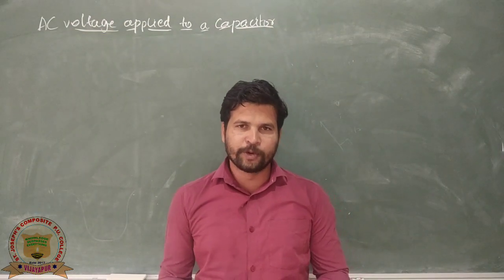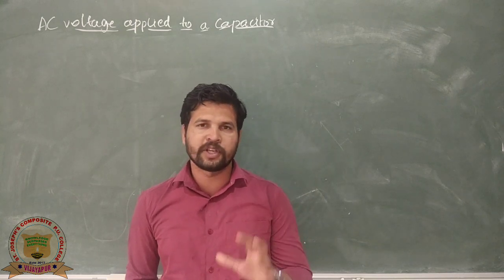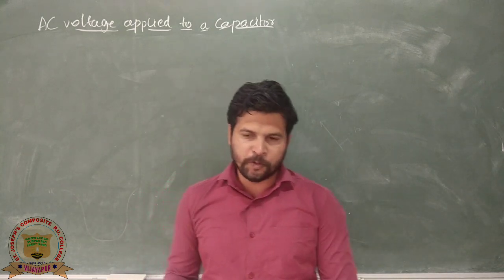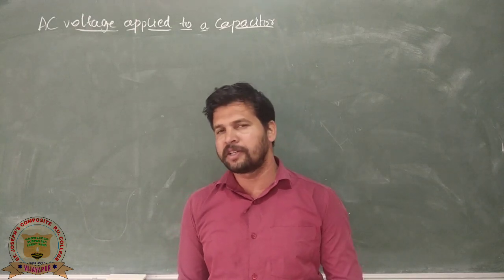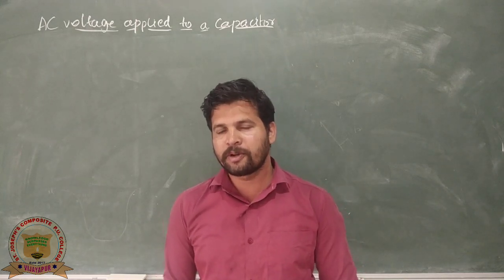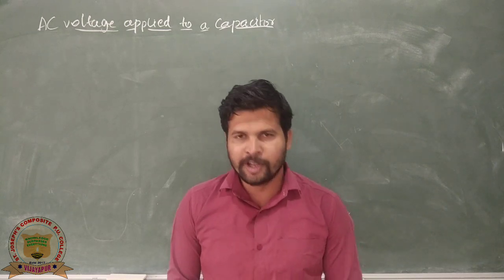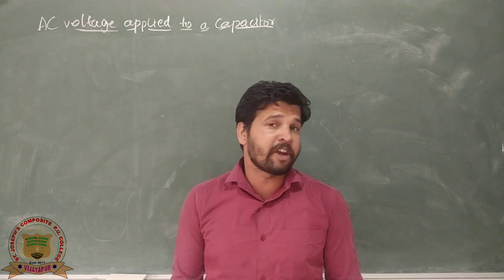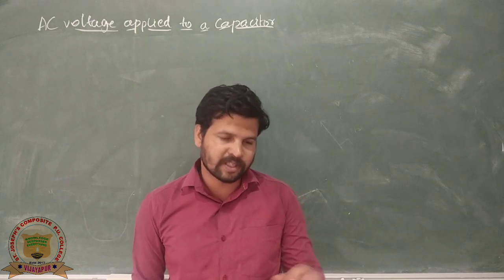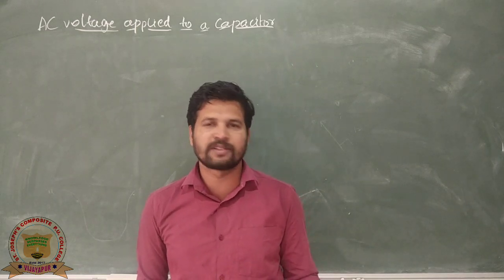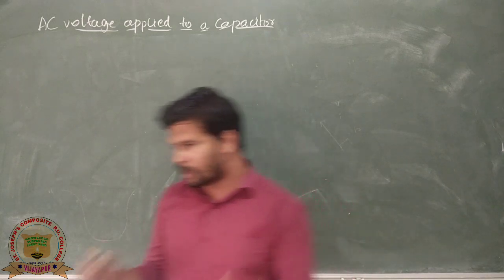Hello friends. In this video we are going to discuss about alternating current passing through a capacitor. When an AC source is connected to a capacitor, the alternating current passes through it because the applied voltage is an alternating voltage. Let us find out the equation of the instantaneous current passing through the capacitor when the capacitor is connected to an alternating voltage source.